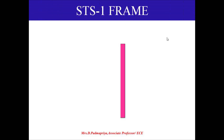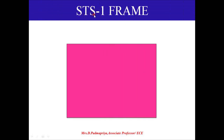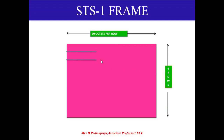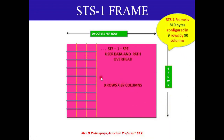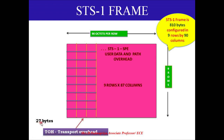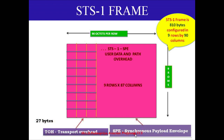STS-1 stands for synchronous transport signal one. It consists of 90 octets per row with nine rows and 90 columns. Out of 90 columns, three columns are reserved, so there are nine by 87 data columns. The total STS-1 frame is 810 bytes (9 × 90). Of this, the transport overhead (TOH) consists of 27 bytes, and the synchronous payload envelope (SPE) consists of 783 bytes (810 minus 27).